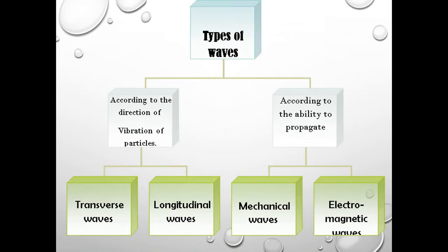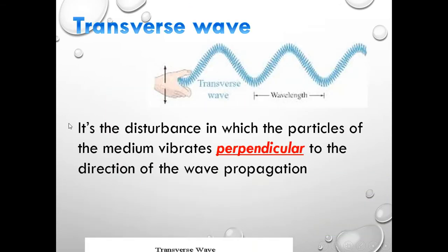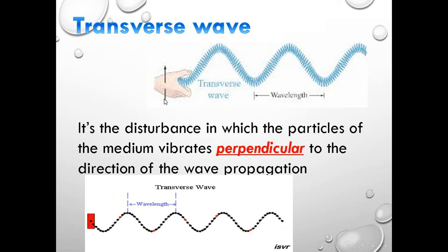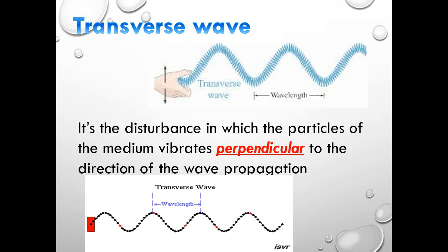Now we are going to classify waves according to the direction of vibration of the particles, and according to the ability to propagate. Some waves can propagate and transfer energy through particles, while others cannot. First, let's look at the types of waves according to the direction of vibration: we have transverse waves and longitudinal waves.